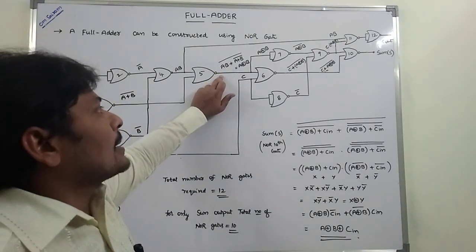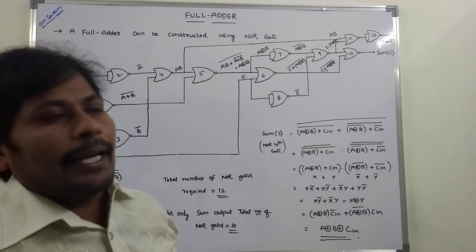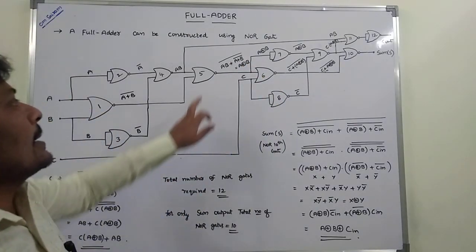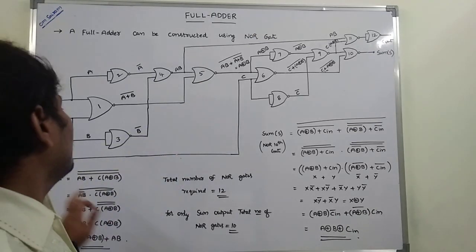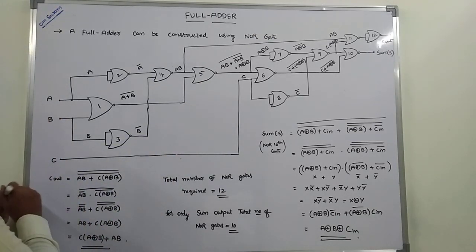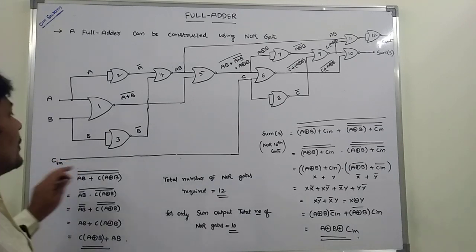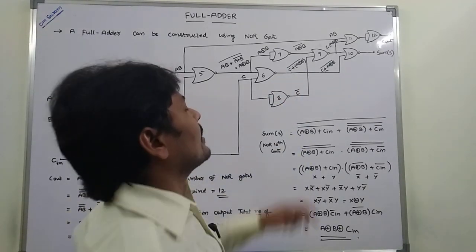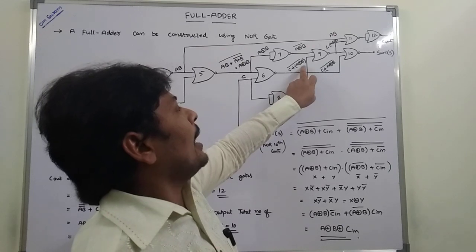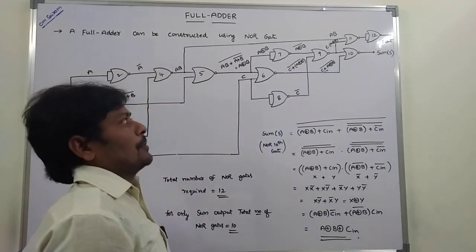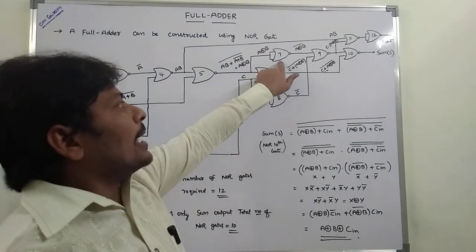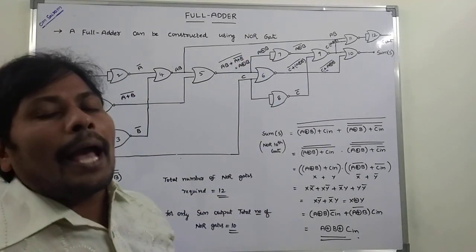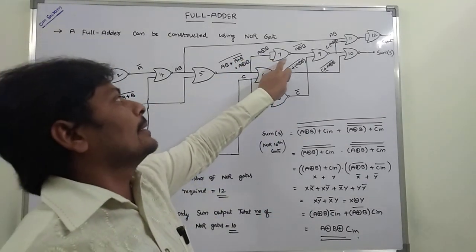This output is then sent as input to the sixth NAND gate. The sixth NAND gate has one input as A XOR B — the output of the fifth NAND gate — and the second input is C_in. So the output of the sixth NAND gate is (C + (A XOR B))'.